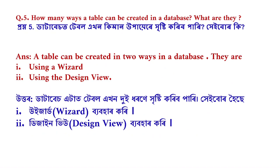Question number 5: How many ways can a table be created in a database? What are they? Answer: A table can be created in two ways in a database — using a Wizard and using the Design view.